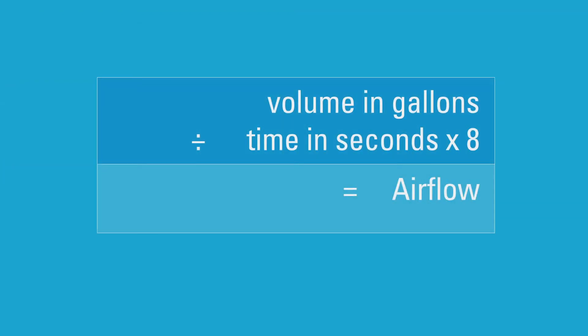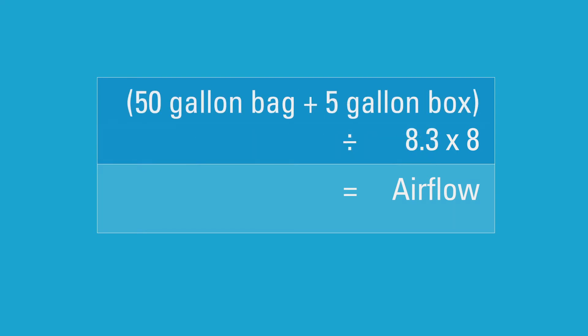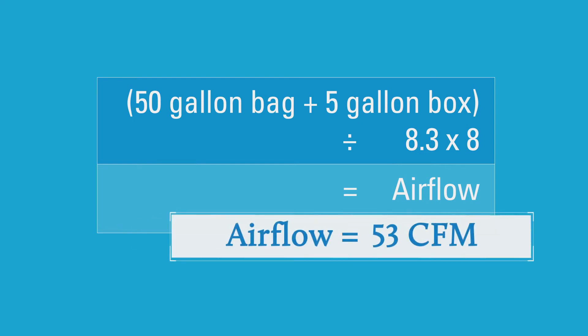Because we know the volume of the bag plus the box is 55 gallons and the elapsed time was 8.3 seconds, we can calculate the airflow in CFM, which gives us 53 CFM.